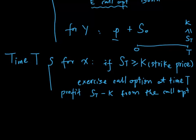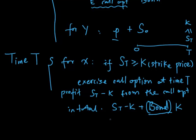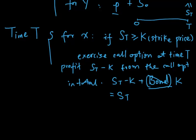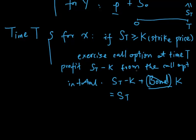So in total, the value of Portfolio X is ST minus K plus the bond value K, which gives us a total value of ST.